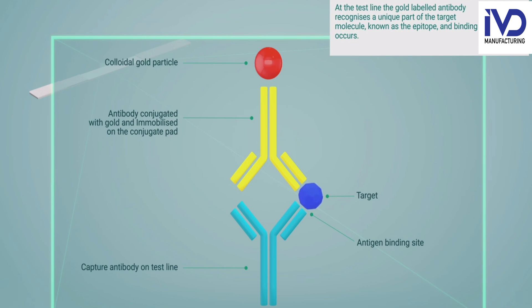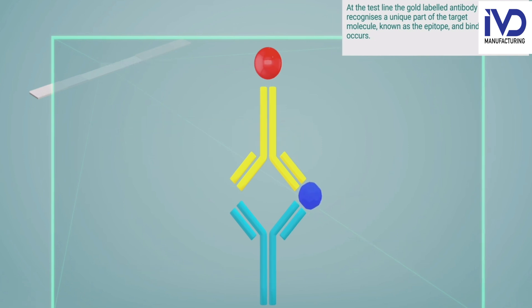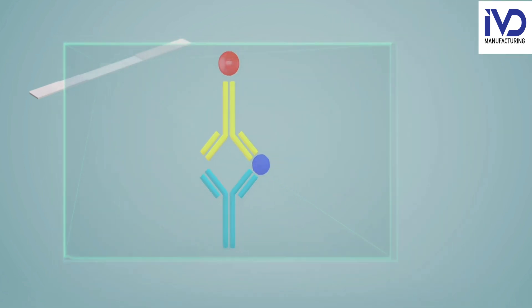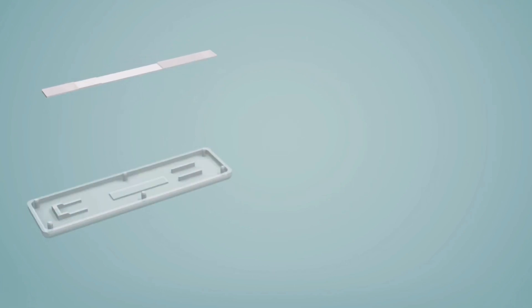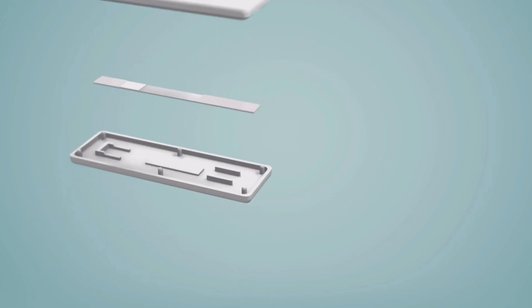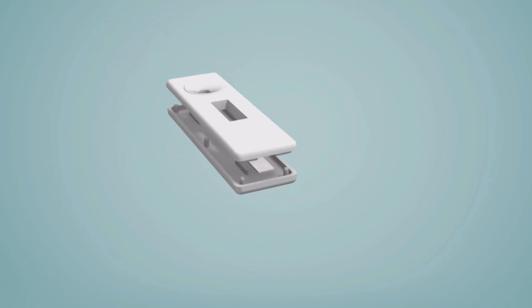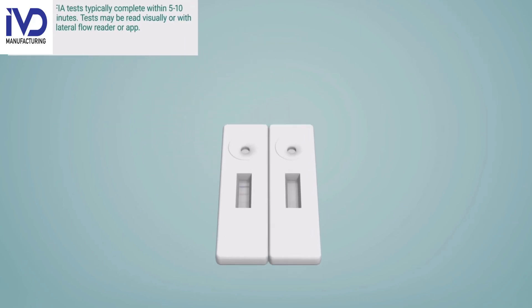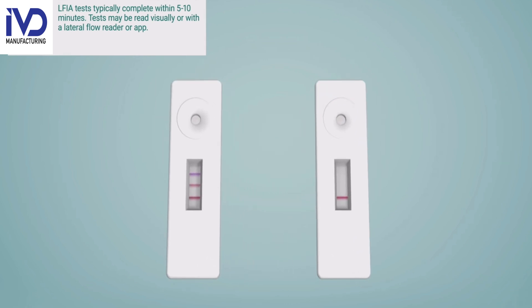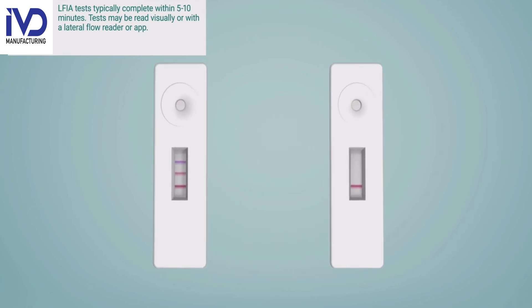This detector antibody is yellow in color and binds with the gold particles. At the end of the reaction, if this sample contains an antigen or antibody particular to the disease, there will be a formation of three lines: the first test line, the second test line, and the third control line.